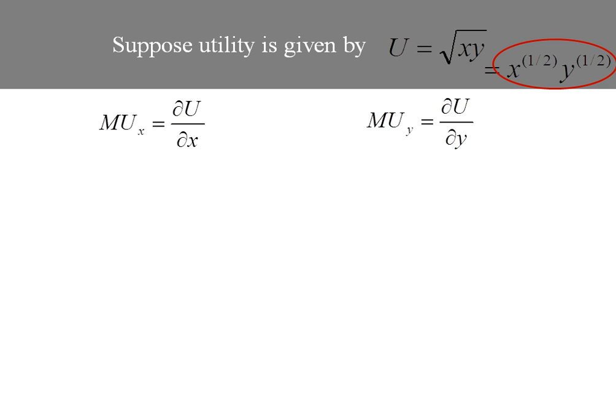Taking the derivative of utility with respect to x, that one-half which is the exponent on x comes down in front. The exponent on x gets reduced by 1, and y to the one-half remains. I can do some simplification — I'm going to convert that one-half into a decimal, 0.5.